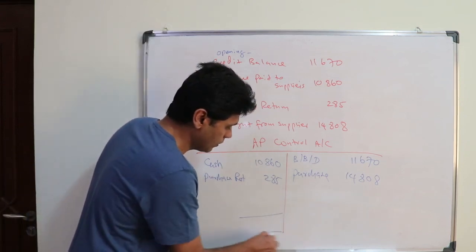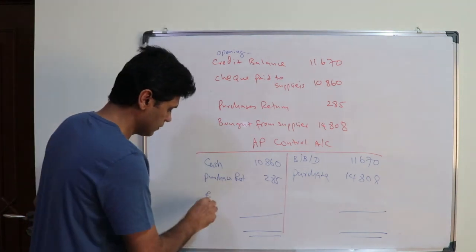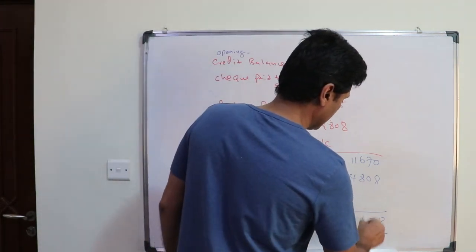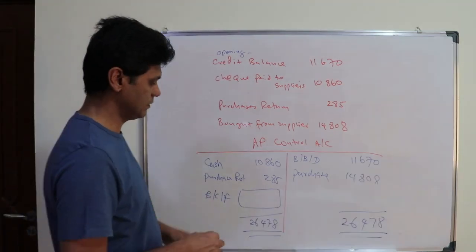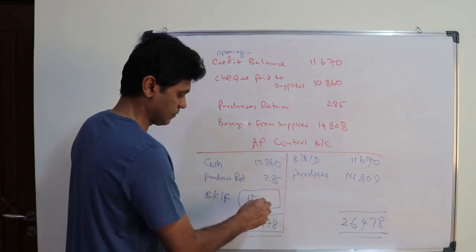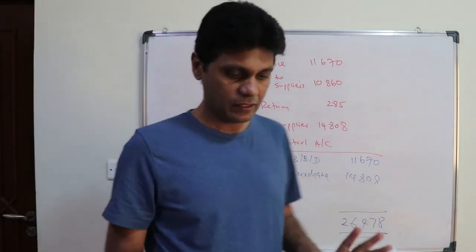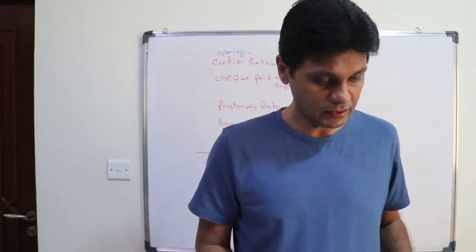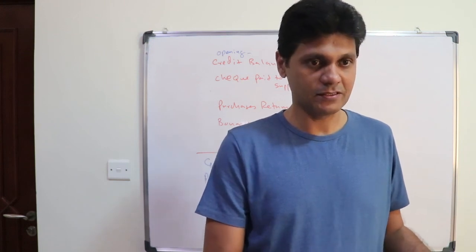Taking the total, the balance carried forward is calculated and carried to the next financial period. That concludes the topic of control accounts. Next week we will discuss bank reconciliation statements.